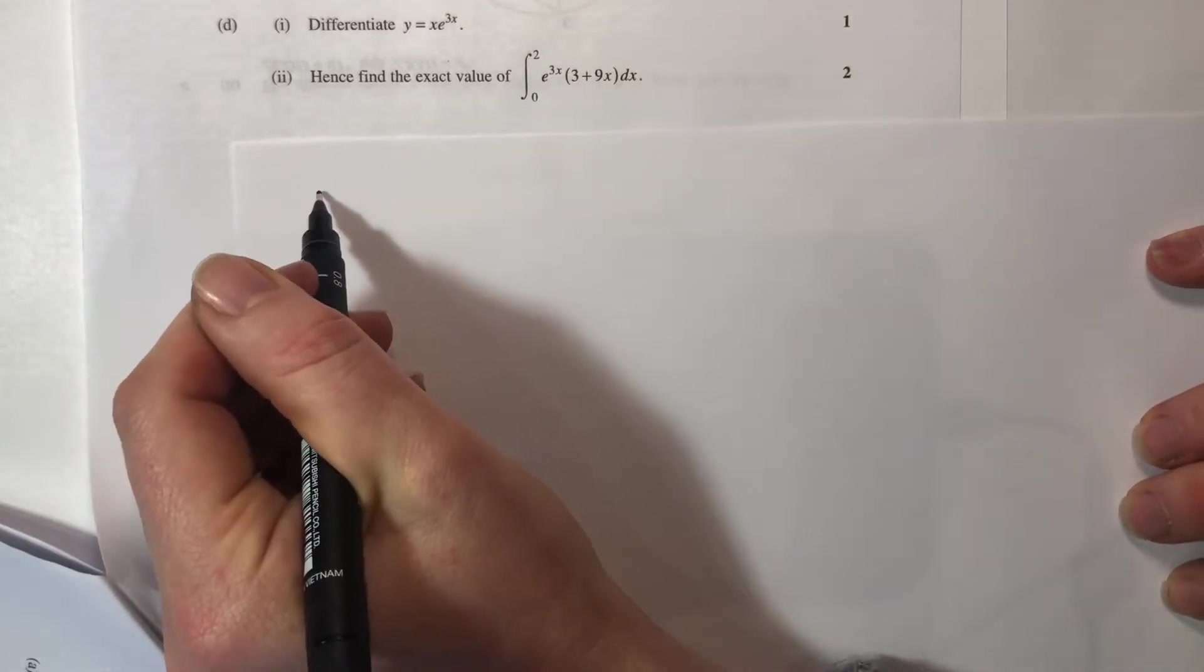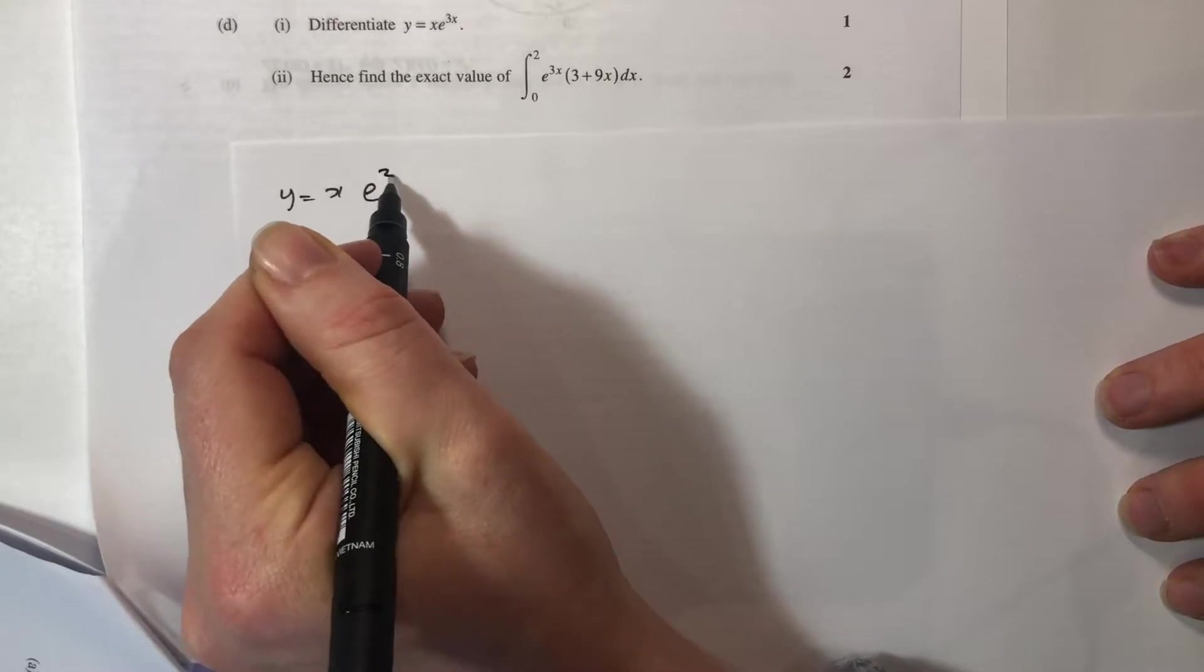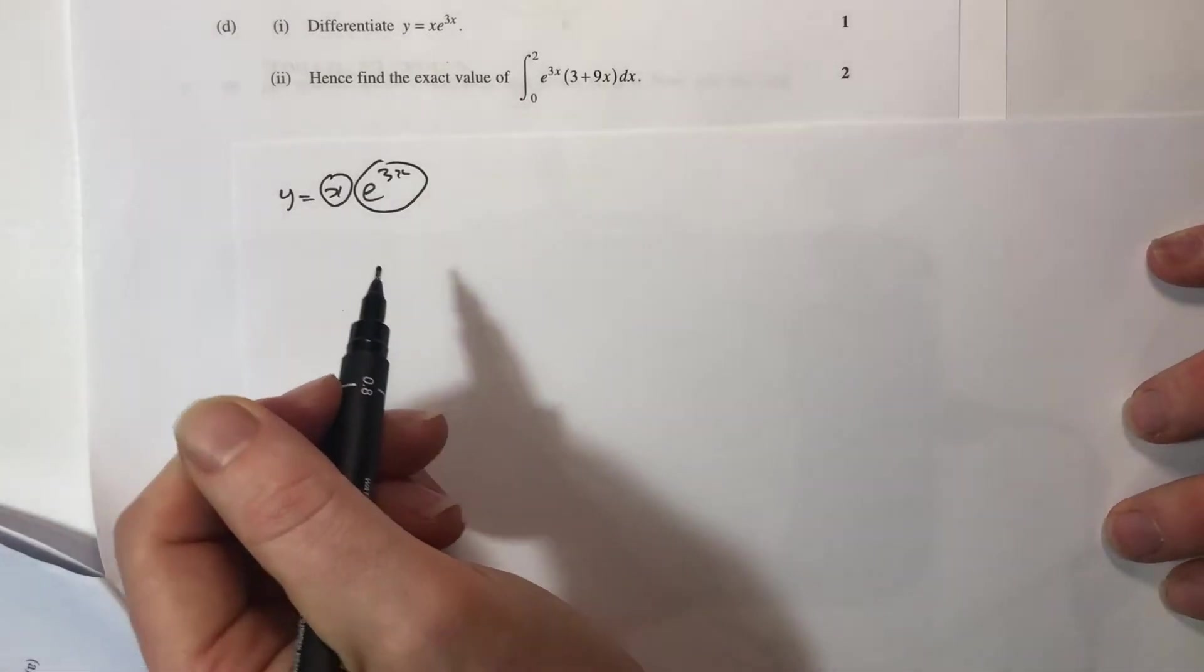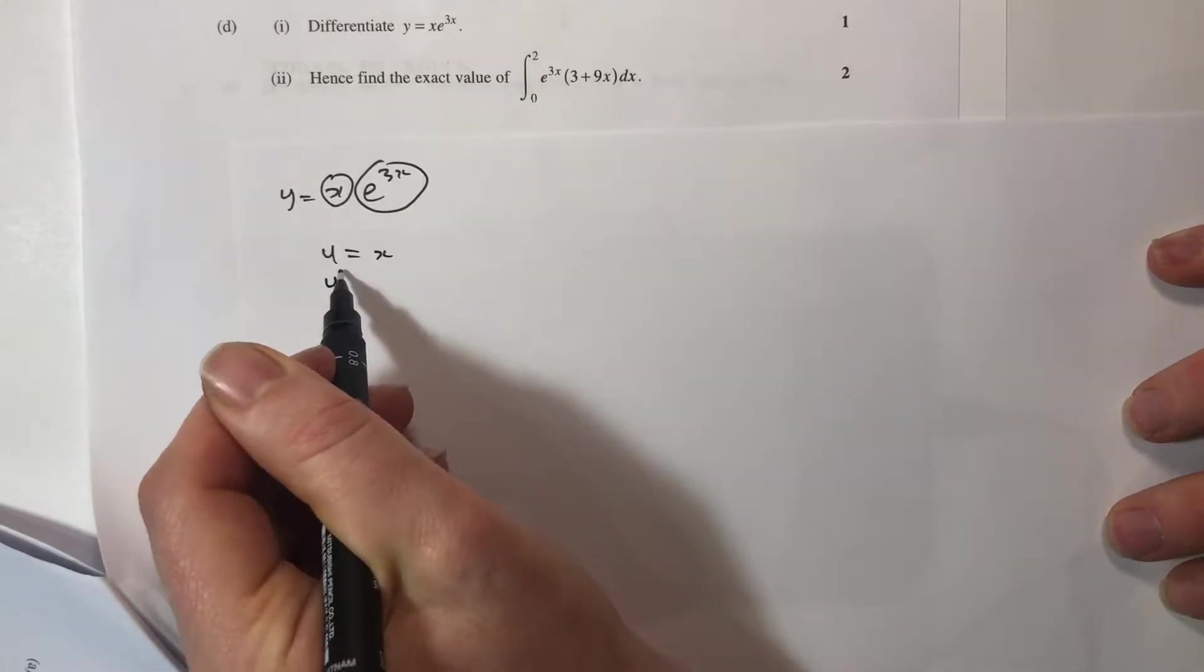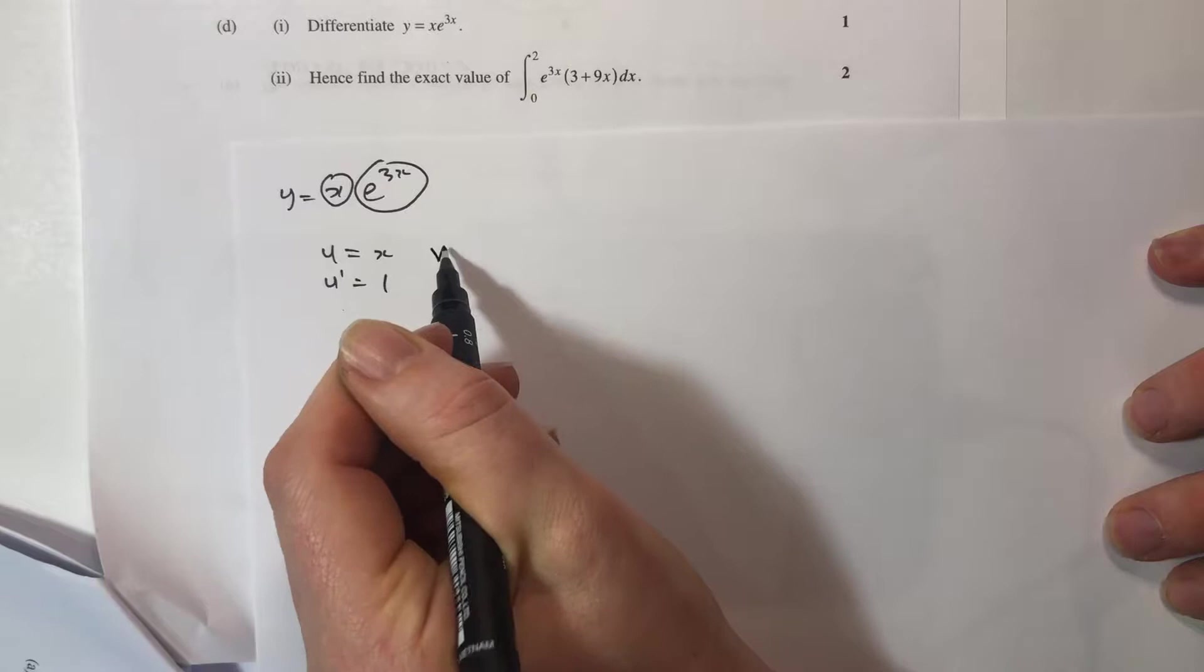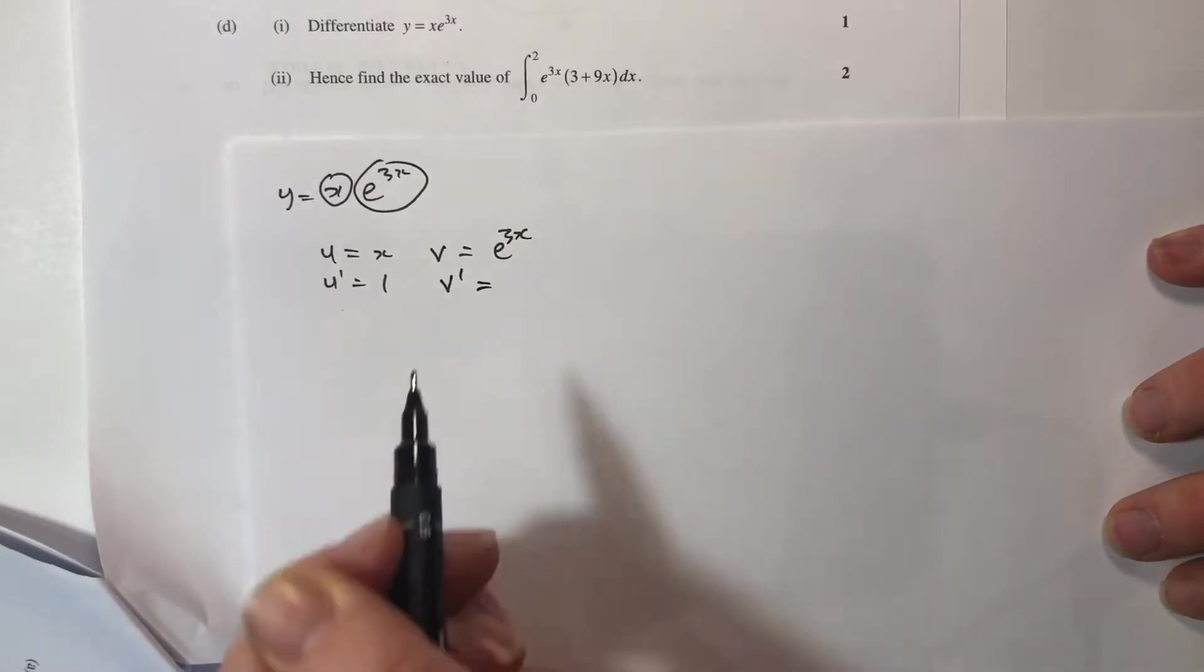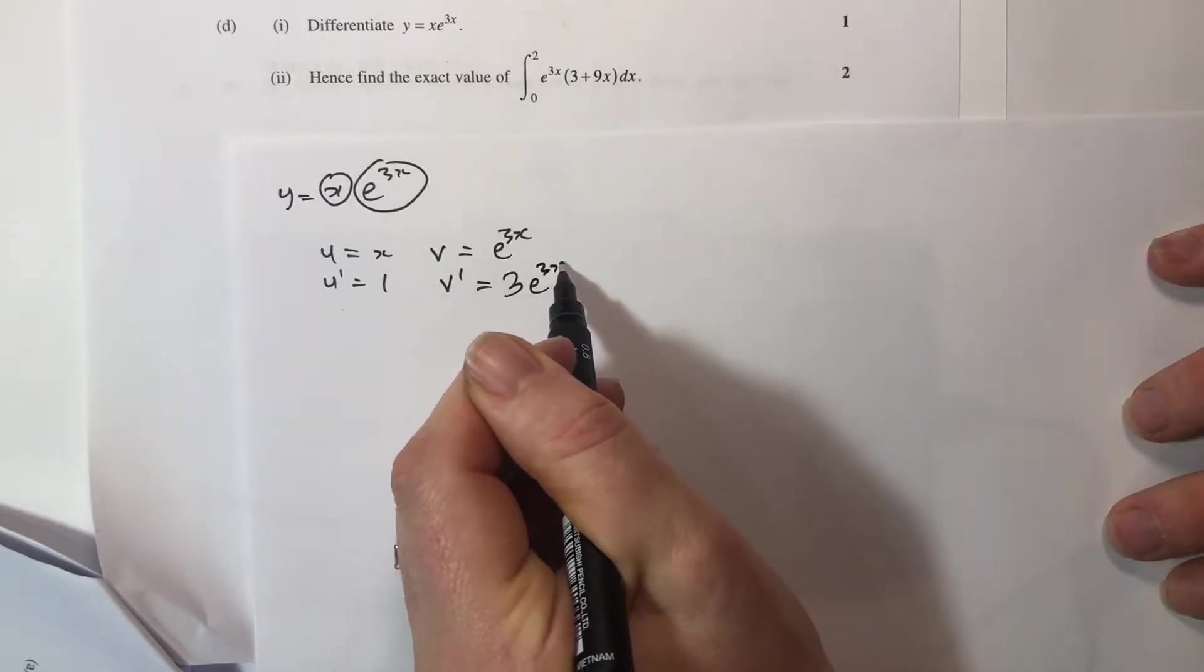y equals x e to the 3x has two functions sitting side by side, this is a product rule where u equals x, u dash equals 1. Setting it out like this: v equals e to the 3x, v dash equals 3e to the 3x for the derivative.